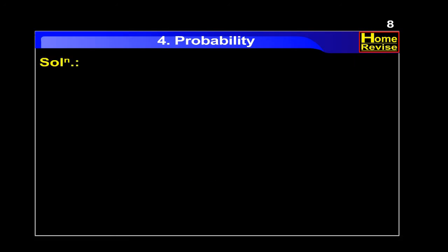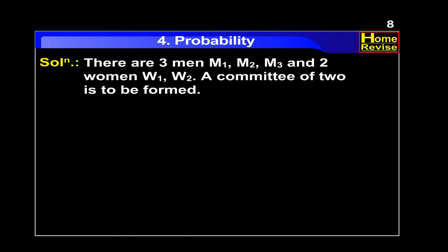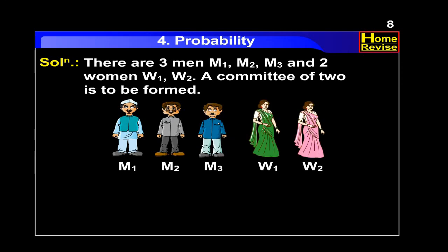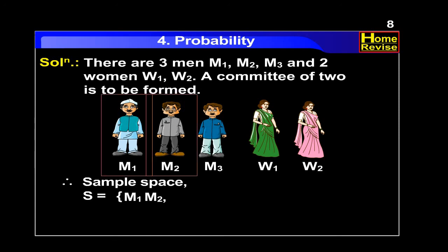Solution. There are three men m1, m2, m3 and two women w1, w2. A committee of two is to be formed. Therefore, sample space S is equal to, in curly brackets: